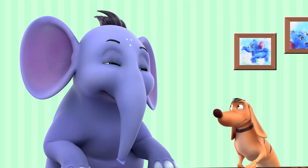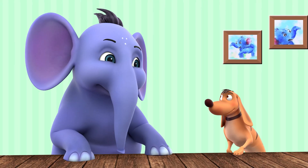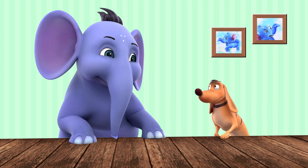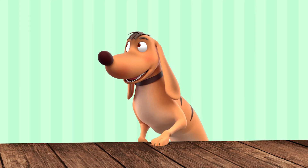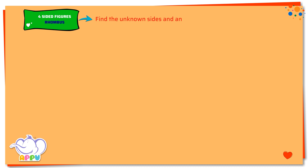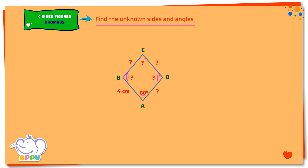Now let's move on to our first exercise. Let's find the unknown sides and angles. ABCD is a rhombus in which AB equals 4 cm and angle DAB equals 80 degrees.